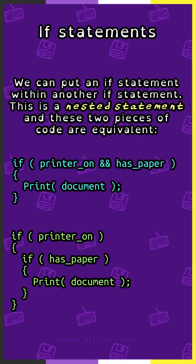We can put an if statement within another if statement — this is a nested statement, and these two pieces of code are equivalent. A: if printer is on and has paper, print document. B: if printer is on, if has paper, print document.